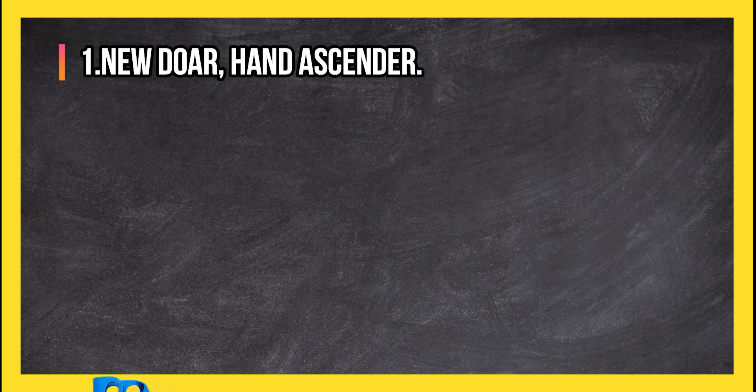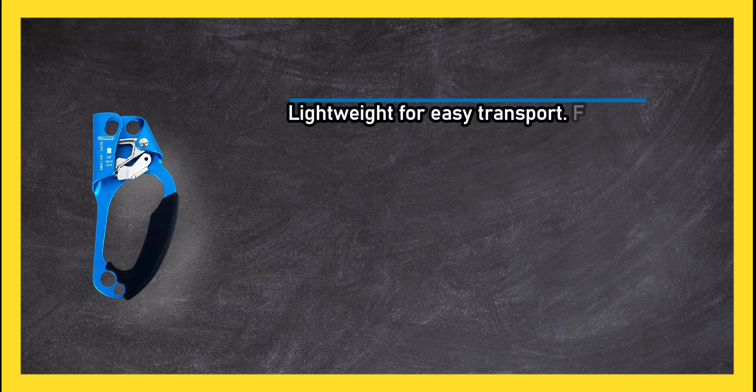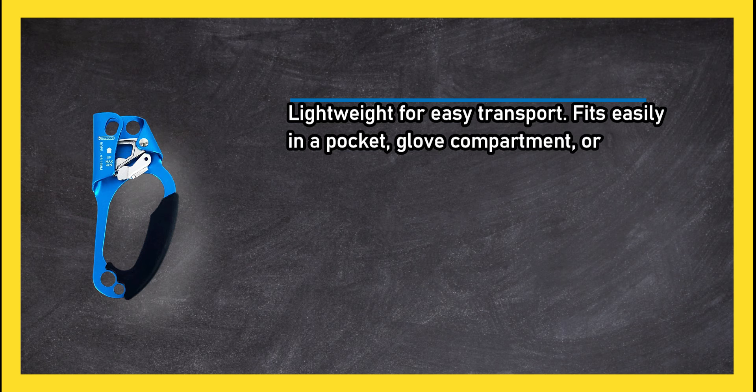At number one, New Doer Hand Ascender. Lightweight for easy transport. Fits easily in a pocket, glove compartment, or tool kit.